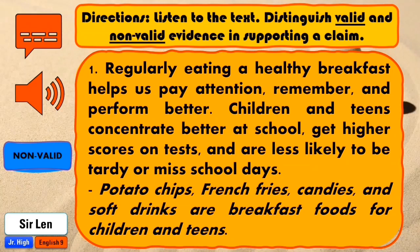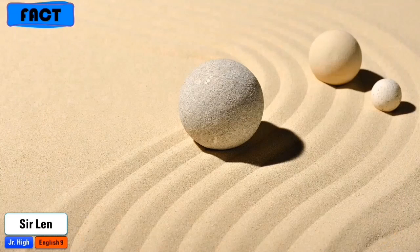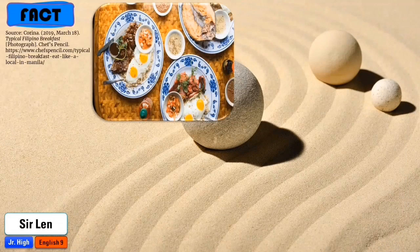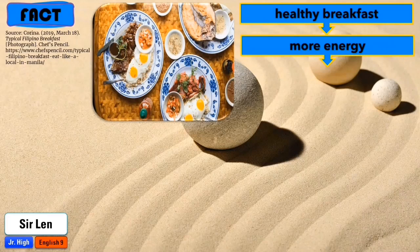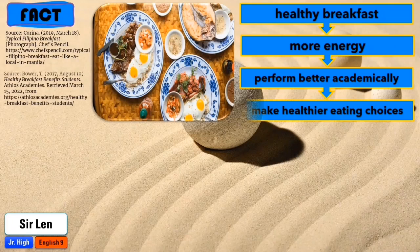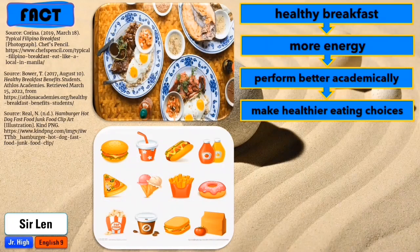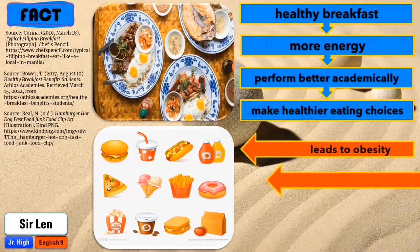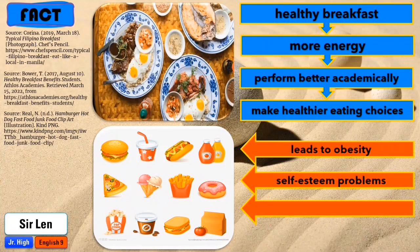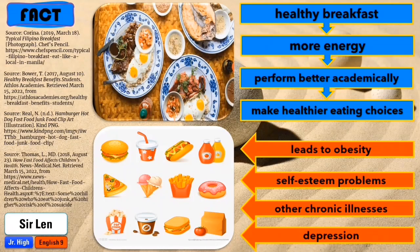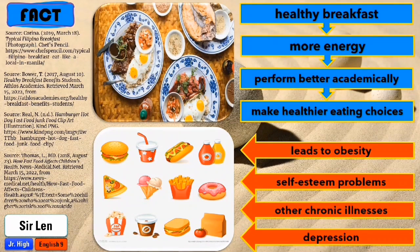Time is up. Thank you for answering. If your answer is non-valid, that's fantastic. Research points to the fact that students who start their day with a healthy breakfast have more energy, perform better academically, and make healthier eating choices throughout the day. Junk food like potato chips, french fries, candies, and soft drinks for breakfast are never healthy at all. It leads to long-term health problems such as obesity, accompanying emotional and self-esteem problems like depression, and chronic illnesses in later life. Depression, in turn, affects growth and development parameters, academic performance, and social relationships.